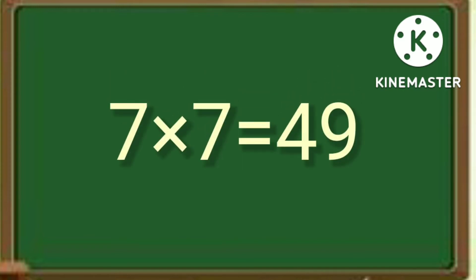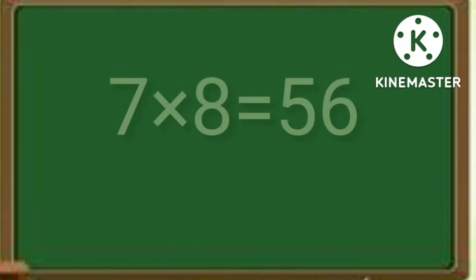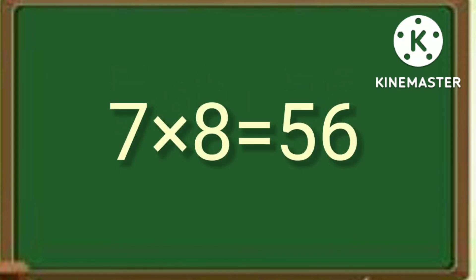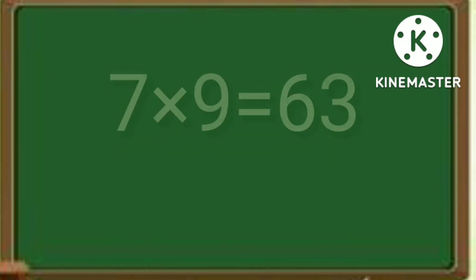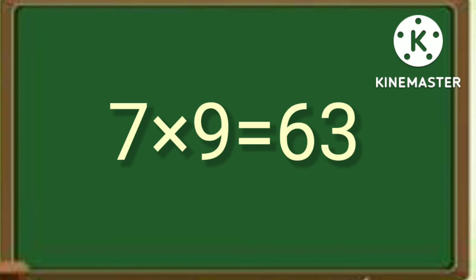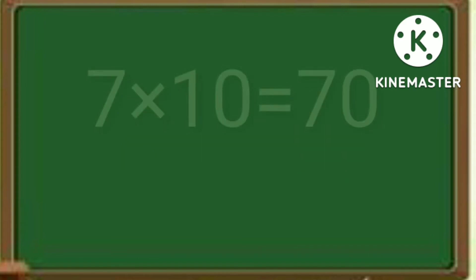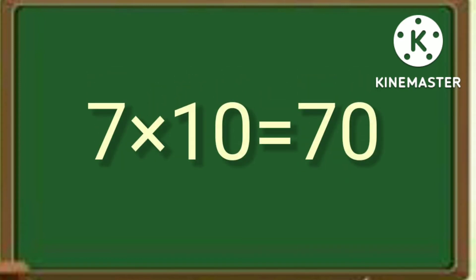7 times 7 is 49. 7 times 8 is 56. 7 times 9 is 63. 7 times 10 is 70.